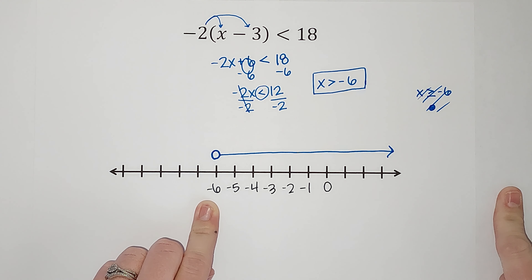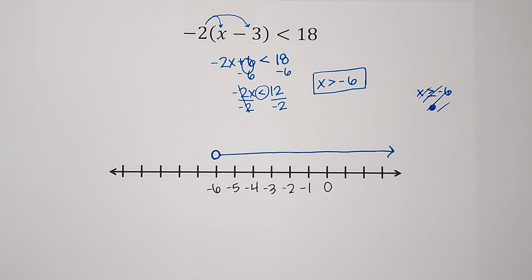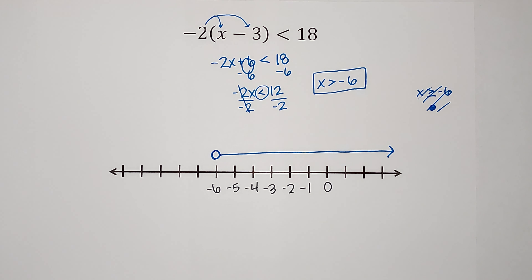X is greater than negative 6, and the numbers greater than negative 6 are to the right, so my arrow is going to go that way. This tells me x can't be negative 6, but it can literally be any number bigger than negative 6. You might wonder why I drew it above the number line — you can totally do it on the number line, I just think it's easier to see above. Hopefully that made sense!